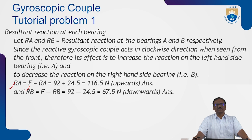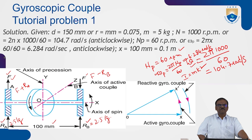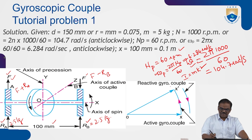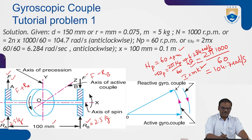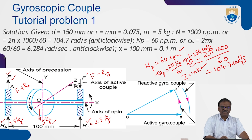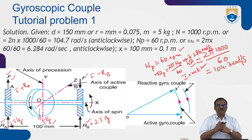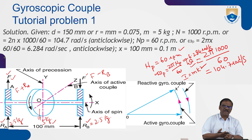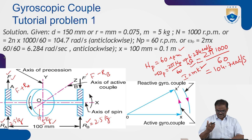Resultant reaction at each bearing: since the reactive gyroscopic couple acts clockwise when seen from the front, it increases the reaction on the left-hand side bearing and decreases the reaction on the right-hand side bearing. Therefore Ra = F + Ra(weight) = 92 + 24.5 = 116.5 N upwards, and Rb = F − Rb(weight) = 92 − 24.5 = 67.5 N downwards. In this tutorial problem we have clearly understood the active and reactive gyroscopic couple acting on a rotating disc.